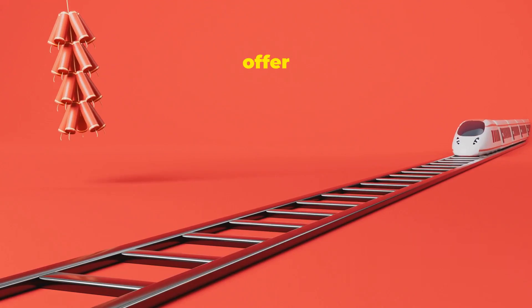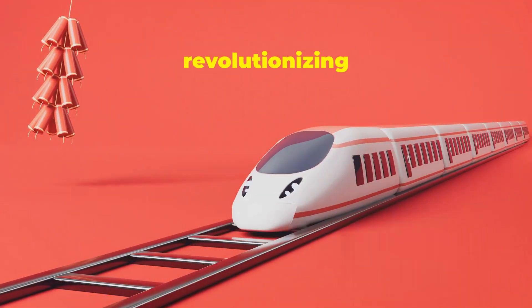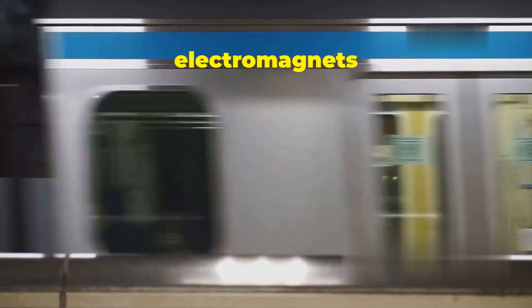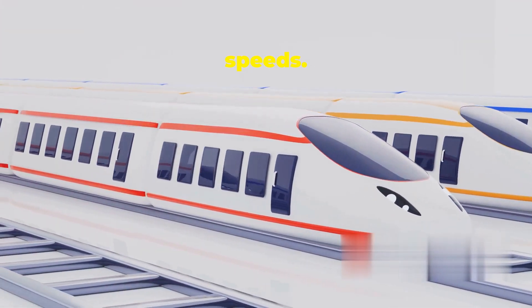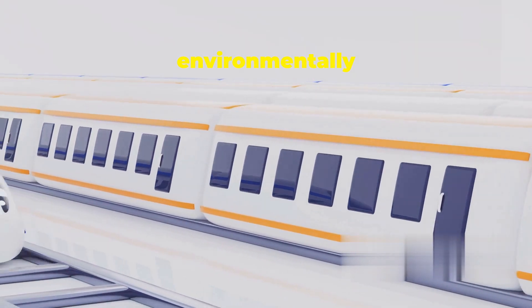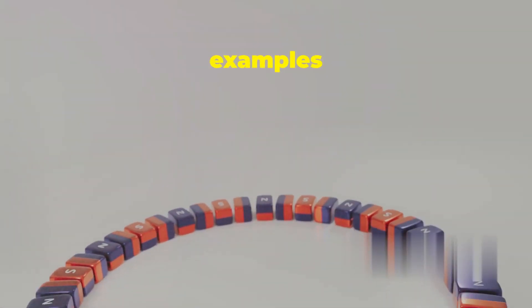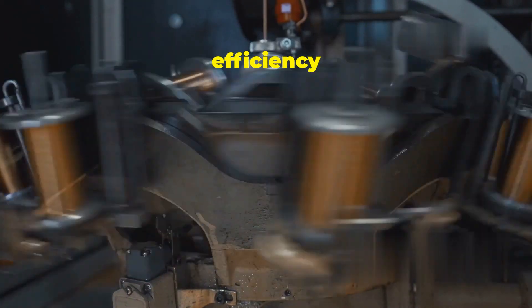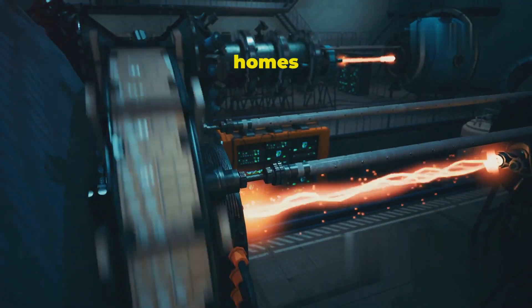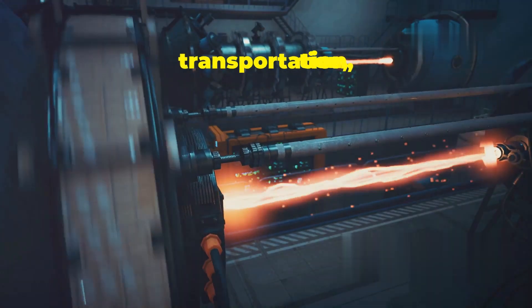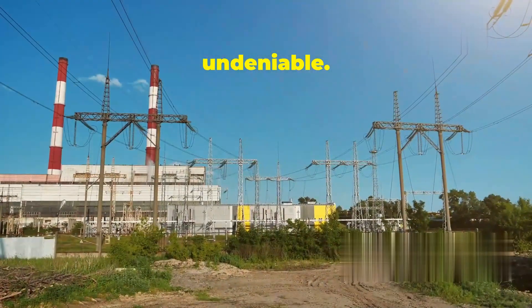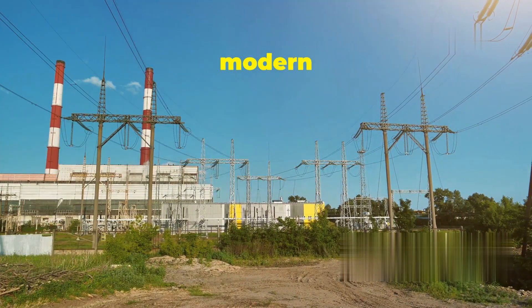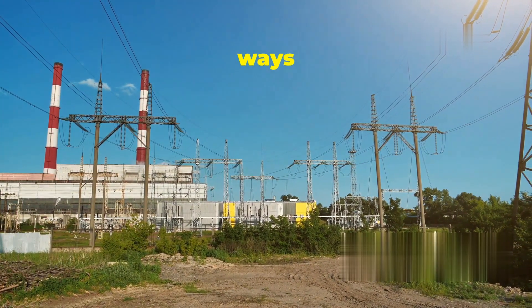Maglev trains: maglev trains, short for magnetic levitation trains, represent the future of high-speed transportation. They offer a glimpse into the potential of electromagnets in revolutionizing travel. These futuristic trains use powerful electromagnets to levitate above the track, eliminating friction and allowing them to achieve incredible speeds. This technology promises faster, more efficient and environmentally friendly transportation. These are just a few examples of the countless ways electromagnets shape our world. Their versatility and efficiency make them indispensable in numerous fields. From powering our homes and industries to advancing medical technology and transportation, their impact is undeniable. Electromagnets are truly one of the foundational technologies of our modern world, driving progress and innovation in ways we often overlook.